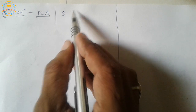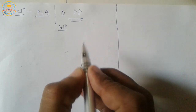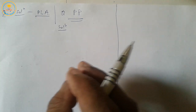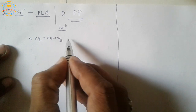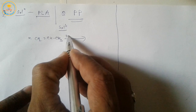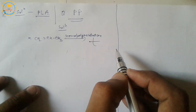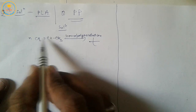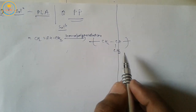The next homework question was: give the structure of PP. PP means polypropylene. We know that the prefix 'poly' is used for homopolymers, so polypropylene is a homopolymer of propylene. N molecules of propylene after homopolymerization are converted into polypropylene, where a double bond is present between the two carbon atoms.